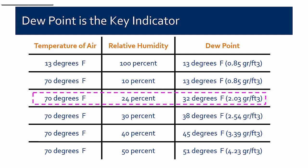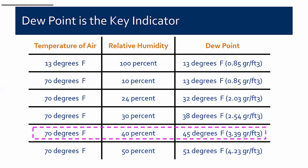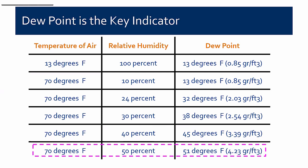At 30% relative humidity — the minimum many hospitals maintain — surfaces would have to be above 38 degrees to avoid condensation. At 40% relative humidity, which is the upper end for many hospitals, surfaces below 45 degrees will get condensation. At 70 degrees and 50% relative humidity, the dew point is about 50 degrees Fahrenheit — an easy benchmark to remember. Many art museums also target 50% relative humidity as ideal for maintaining artwork.